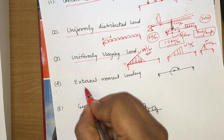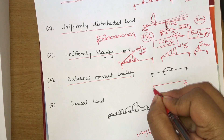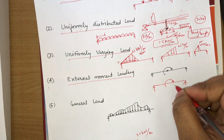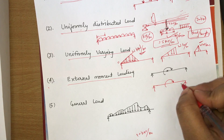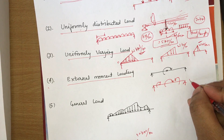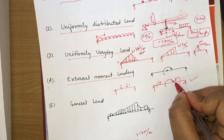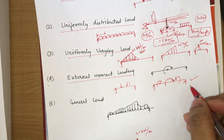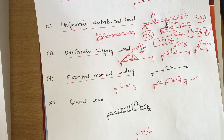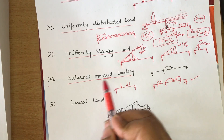Another important type of loading is external moment loading. A moment can be applied at any location on the beam — it can be a clockwise moment or an anti-clockwise moment. Sometimes no external forces are given, only an external moment, and we still need to analyze the reactions on the beam.